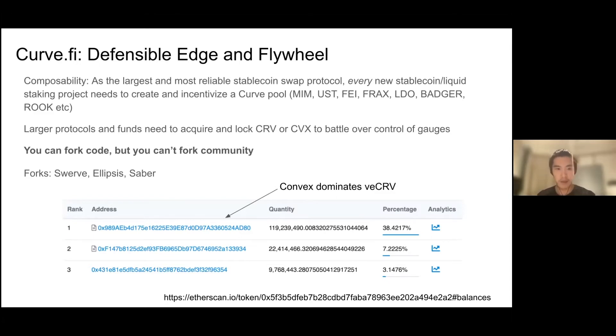Every algo stablecoin needs Curve to get on the map. And beyond stablecoins, you also have the liquid staking projects — Lido has a staked ETH pool, and Badger has various methods of wrapping Bitcoin and interest-bearing Bitcoin.